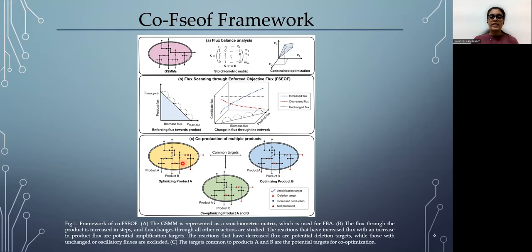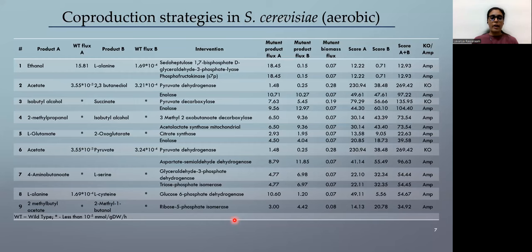So when we perform FSUF for both products, we see that we obtain some amplification targets and some knockout targets, which are denoted by tick marks in the process. And when we identify the common targets, if we apply these intervention strategies, we should be able to see a good increase in product A and B. And this is verified using FBA.